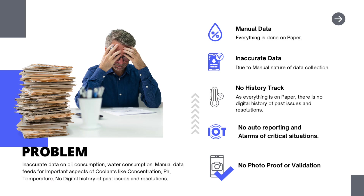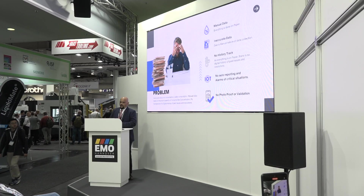If you see the problems — this person has to go through a lot of sheets to manage the coolant. The problems are inaccurate data on oil consumption and water consumption, manual data feeds of important aspects like coolant concentration, pH, and temperature, and no digital history of past issues and resolutions. So again: manual data, inaccurate data, no history tracking, no auto-reporting, and no photo proof or validation.